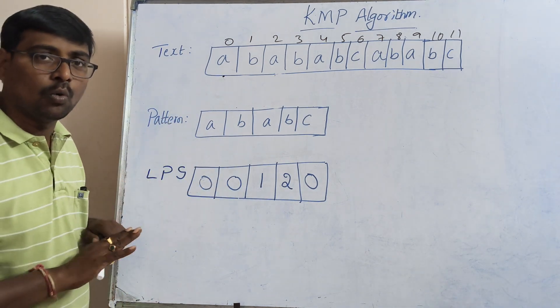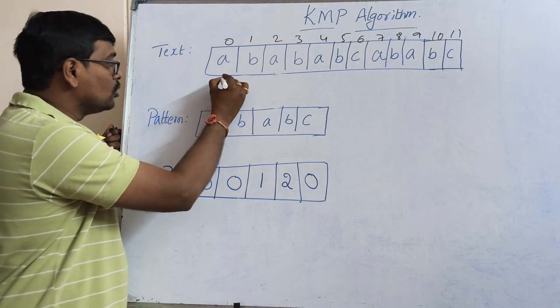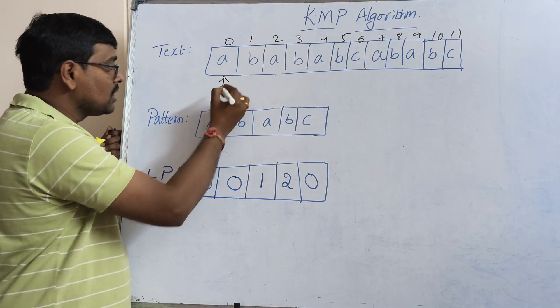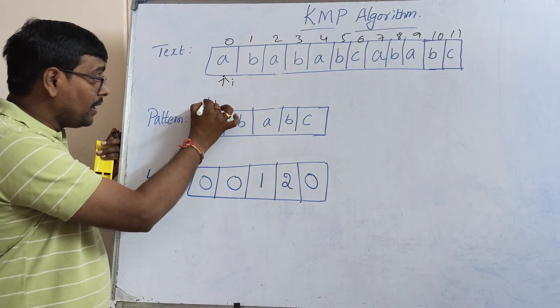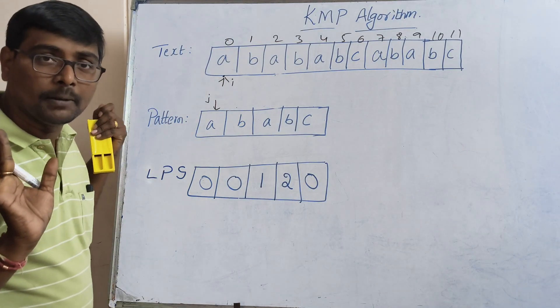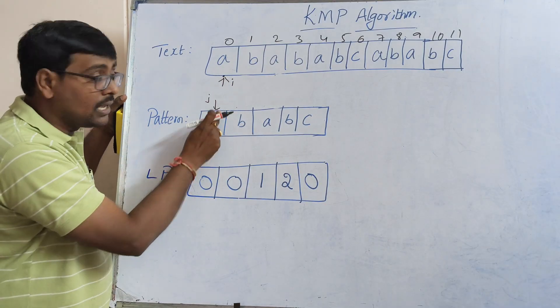Now come to our comparison. Here I am using two pointers: one is 'i' for text movement, and another pointer 'j' for pattern movement. Do the comparison. First, 'i' and 'j'.